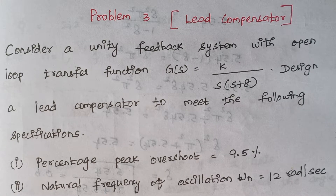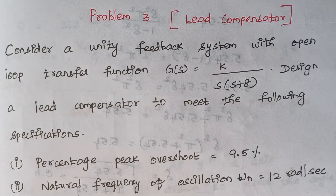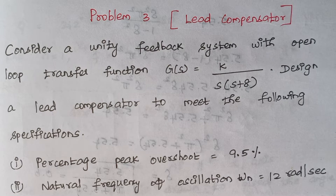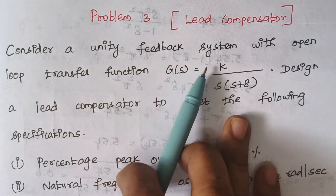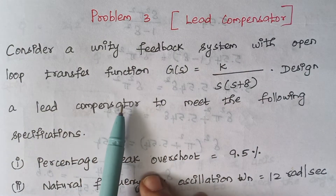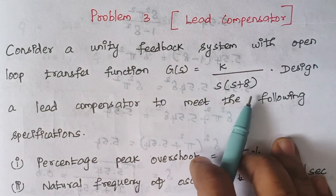Hello viewers, I am Kousalia. Today we are going to solve problem number 3 under the topic lead compensator. Before that, you will get a clear idea if you go through the procedure of how to solve a problem using lead network. I will give the link in the description, kindly go through it. The problem is: consider a unity feedback system with open loop transfer function G(s) equal to K by s into s plus 8.